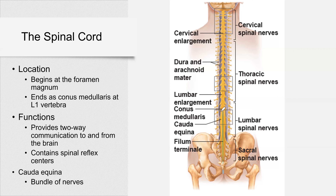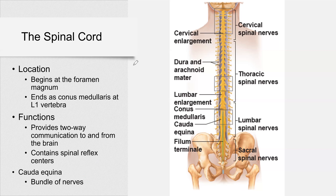The inferior part of the spinal cord — below the conus medullaris — we have spinal nerves that form a structure called the cauda equina. It's a bundle of nerves that goes all the way down to the sacrum and coccyx, but this is not part of the spinal cord — those are spinal nerves.